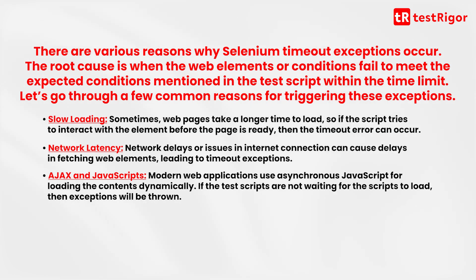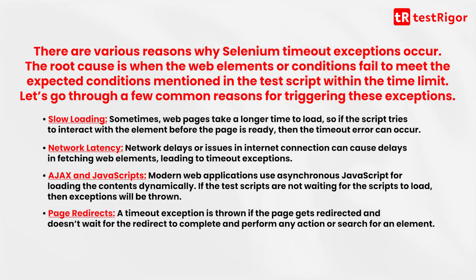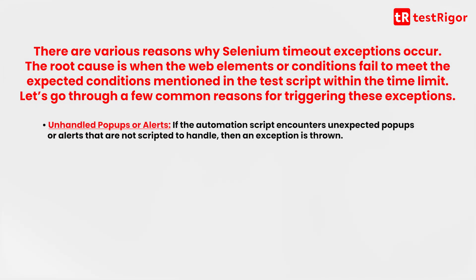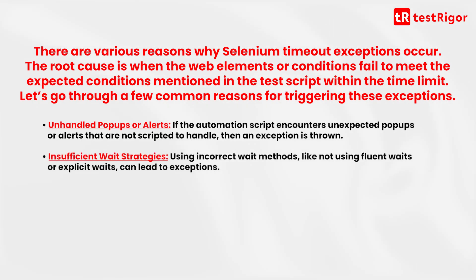Ajax and JavaScript — modern web applications use asynchronous JavaScript for loading the contents dynamically. If the test scripts are not waiting for the scripts to load, then exceptions will be thrown. Page redirects — a timeout exception is thrown if the page gets redirected and doesn't wait for the redirect to complete before performing any action or searching for an element. Unhandled pop-ups or alerts — if the automation script encounters unexpected pop-ups or alerts that are not scripted to handle, then an exception is thrown. Insufficient wait strategies — using incorrect wait methods like not using fluent waits or explicit waits can lead to exceptions.